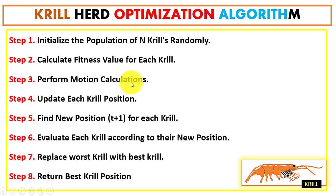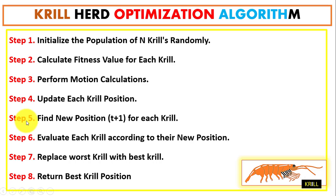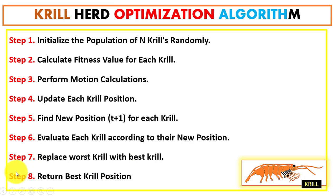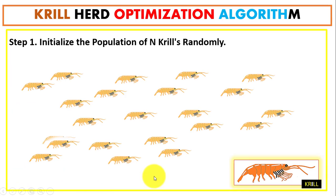In the third step we perform motion calculation for the krills. After motion calculation, we update the position of each krill and compute the new position in step 5. Then we evaluate each krill according to their new position, find the best and worst krill, replace the worst with the best, and return the position of the best krill.